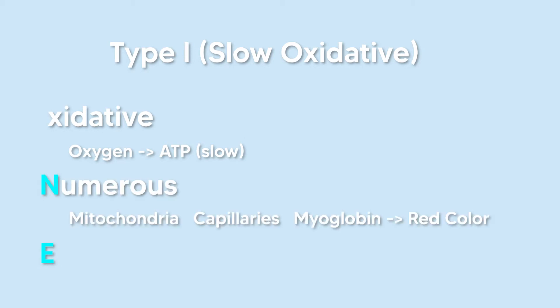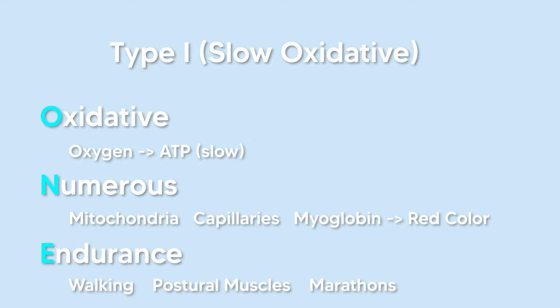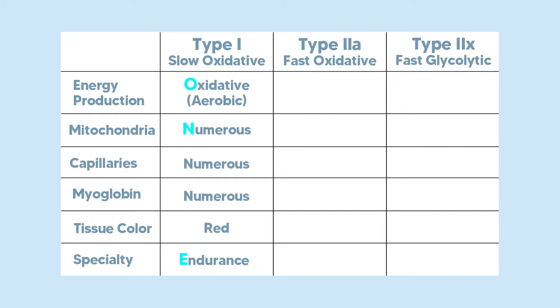and numerous myoglobin, which is why it appears red. This makes sense because it uses oxygen to create energy, so it needs a big network of blood and oxygen circulating through it, which explains the red color. The E in ONE stands for endurance, because this is the main feature of Type 1 fibers — they are used for slow endurance activities like walking.